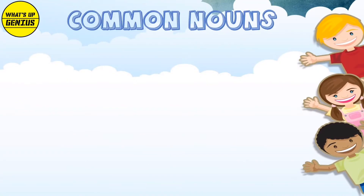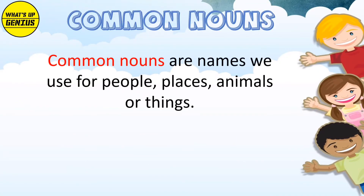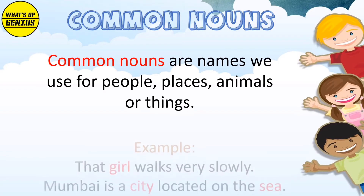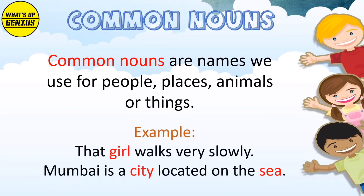Common Nouns are the names we use for people, places, animals or things. Example: That girl walks very slowly. Mumbai city is the city located on the sea.